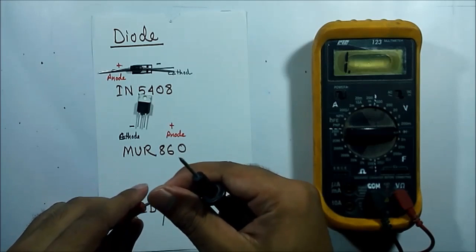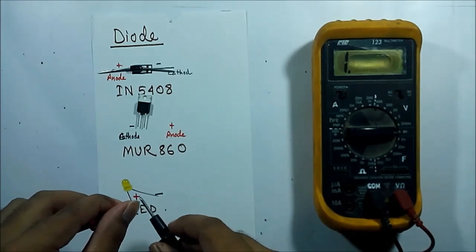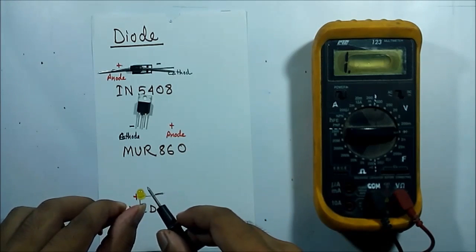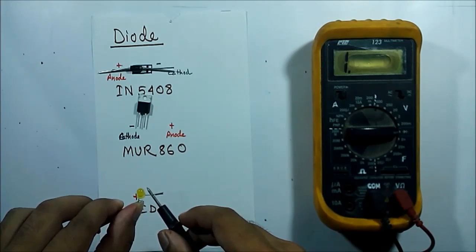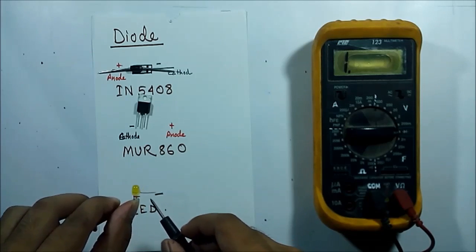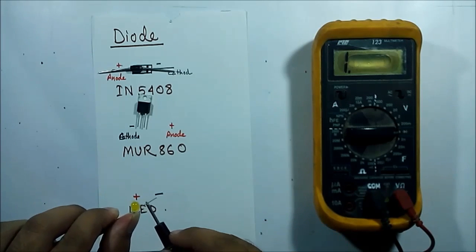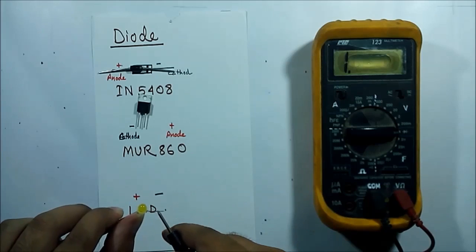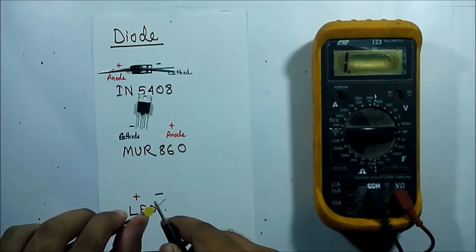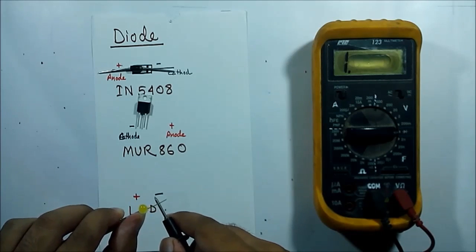If I alter the leads I get no result and the LED is also not blinking. So the LED is okay. If I get a result in both cases then the LED was not okay.